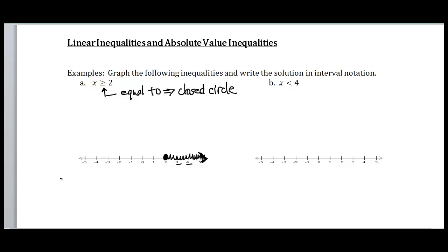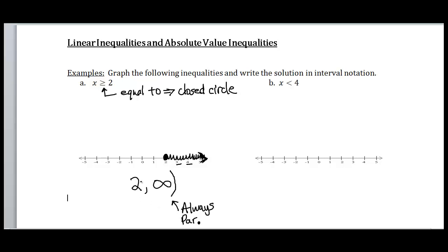Now, to write my solution in interval notation, I always move from left to right, and I want to know where my shaded region is. My shaded region starts at x equals 2, and continues indefinitely to the right — that means infinity. Whenever I have infinity, I'm always going to put a parenthesis. Around 2, I'm either going to have a square bracket or a parenthesis. Since I have a closed circle and this equal sign, I'm going to use a bracket — that means include that number as part of my solution. So 2 to infinity is my solution presented in interval notation.